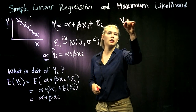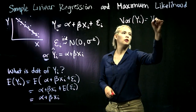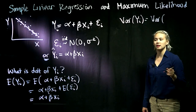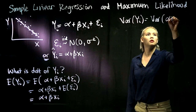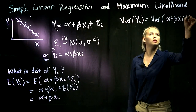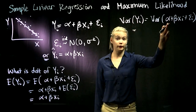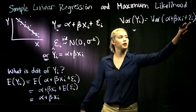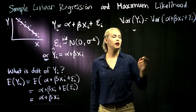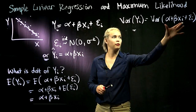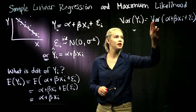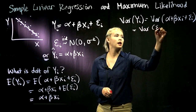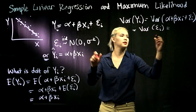Next we need to figure out the variance of Y_i. Substituting in alpha plus beta times X_i plus epsilon_i: alpha is constant, beta times X_i is constant, and the only variable part is epsilon_i. Since the variance of a constant plus a variable is just the variance of the variable, the variance of Y_i equals the variance of epsilon_i, which is sigma squared.